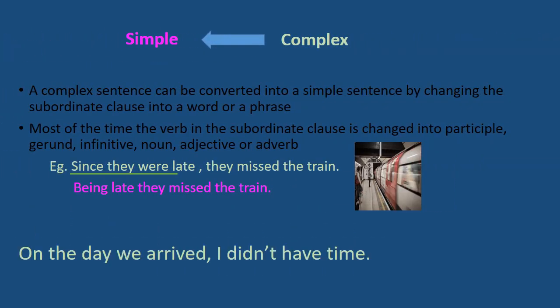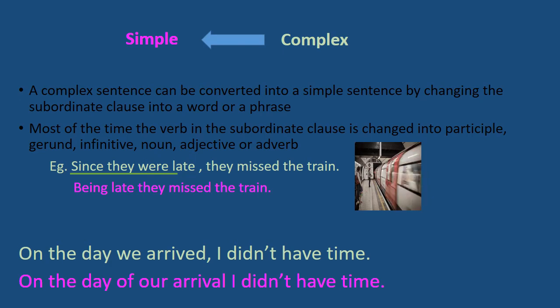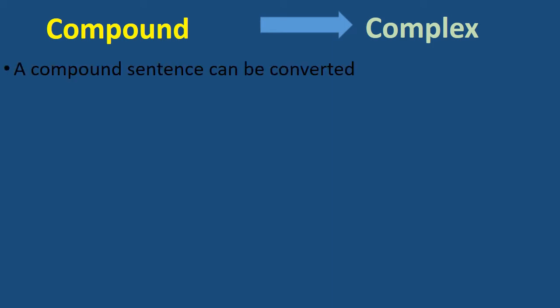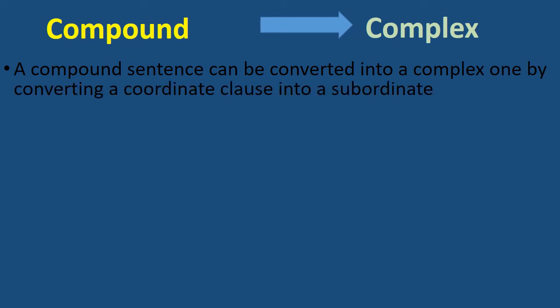Another example: 'On the day we arrived, I didn't have time.' Converting to simple: 'On the day of our arrival, I didn't have time.' The verb is changed to the noun form 'arrival.' Now we will convert a compound sentence to a complex one by changing a coordinating clause into a subordinating clause.